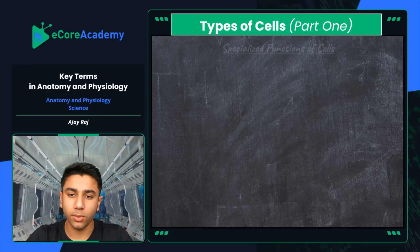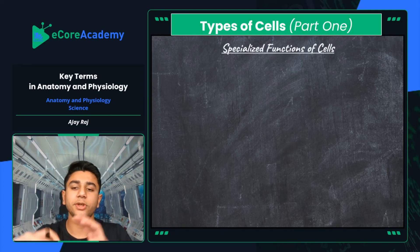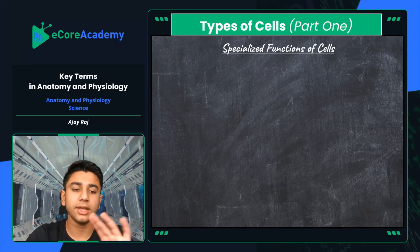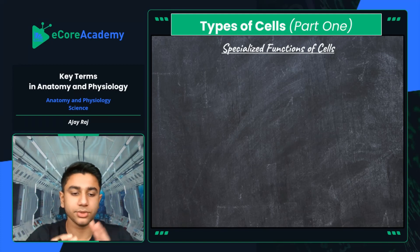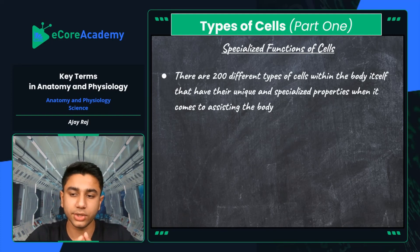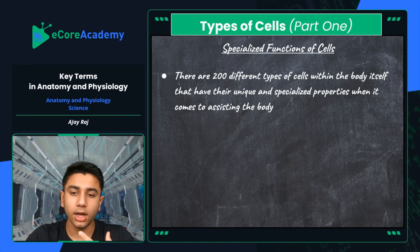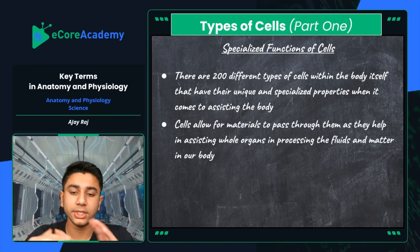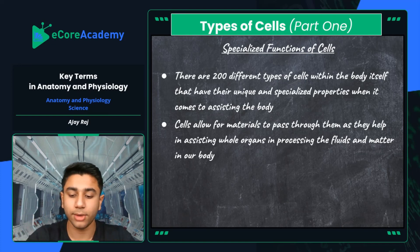Now we're on to types of cells, part one. We're going to look at some of the specialized functions of cells and key terms for different types of cells. There are approximately 200 different types of cells within the body, each with unique and specialized properties to assist the body. These are generic classifications — cells allow for materials to pass through them and help in processing fluids and matter in our body.